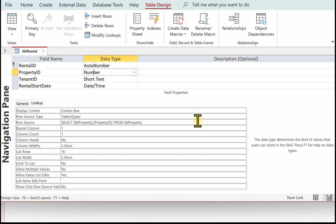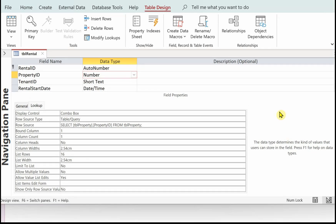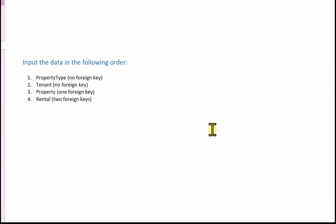Based on a table, we're selecting property ID from TBL property. That completes the validation for the letting agency database. The next thing to do is input the data, and we need to do this in a specific order. Firstly, the tables that have no foreign key — that's property type and tenant. Then the table with one foreign key, which is property. And then finally the data for the rental, which has two foreign keys.